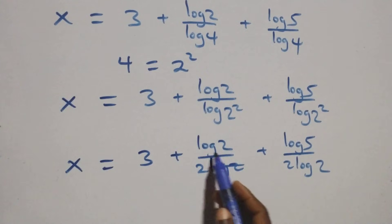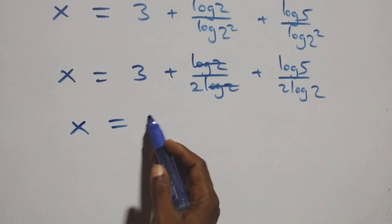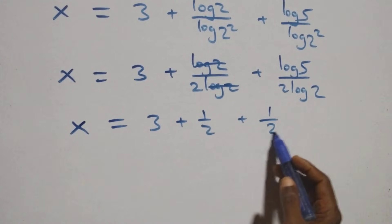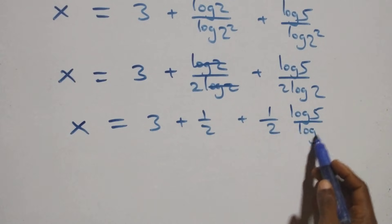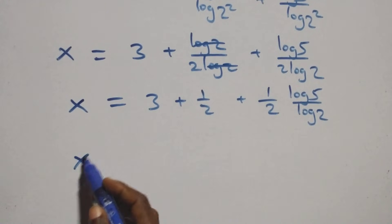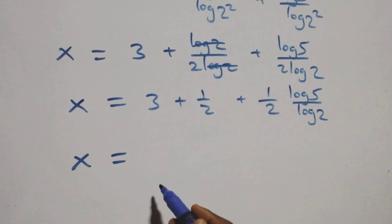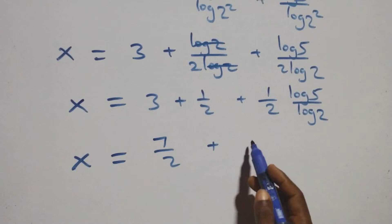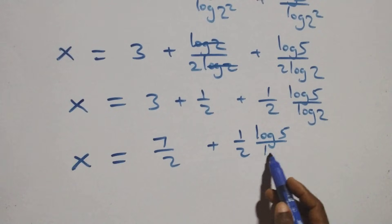The log 2 terms cancel in the first fraction, so it becomes 1/2. This gives x equals 3 plus 1/2 plus 1/2 times log 5 over log 2. The 3 plus 1/2 can be written as 7/2, so x equals 7/2 plus 1/2 times log 5 over log 2.